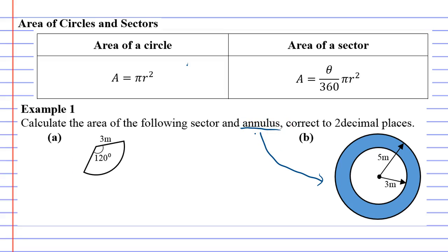We'll start with the sector, which is one we have already done an example like this, but we'll go over it anyway. Theta over 360 times pi times r squared, just taken from the formula at the top. Theta is the angle, which is 120 over 360, times pi times r squared, and r is the distance from the middle to the edge of the circle.